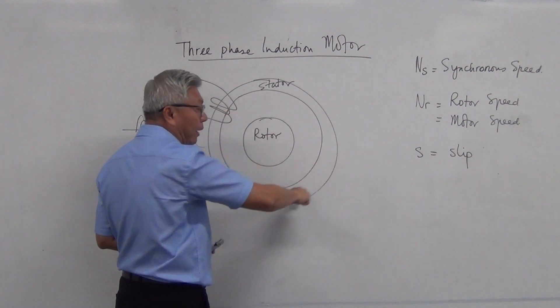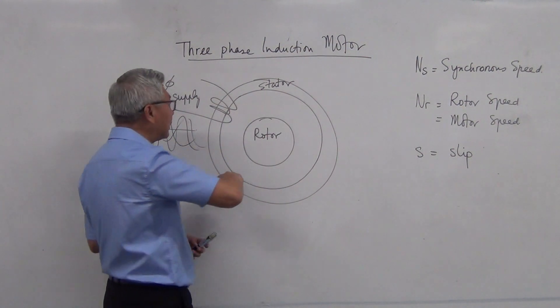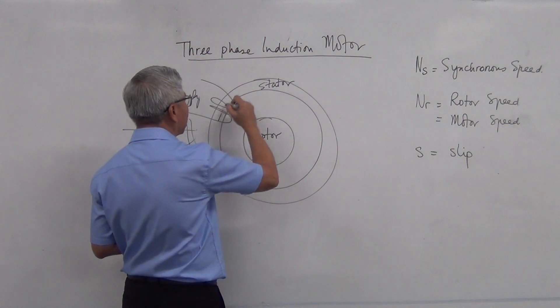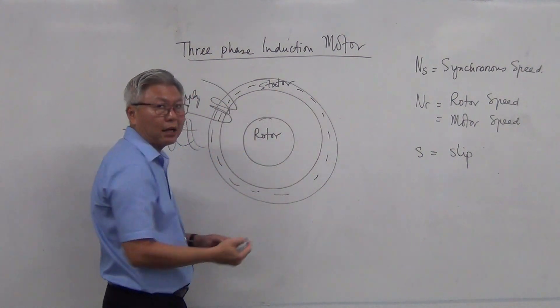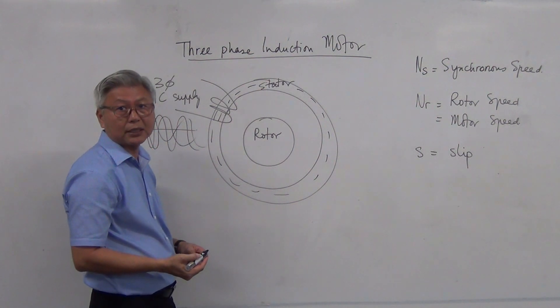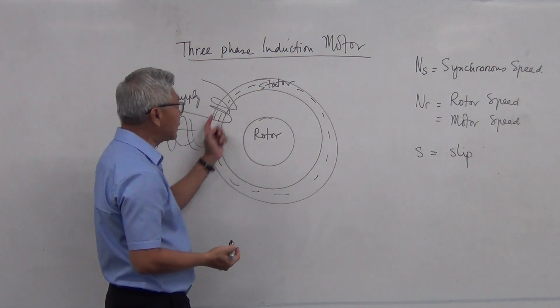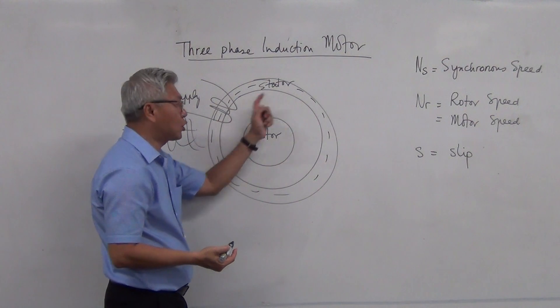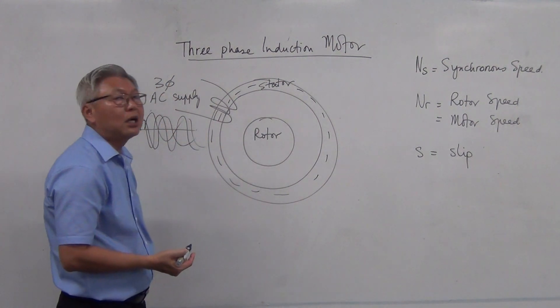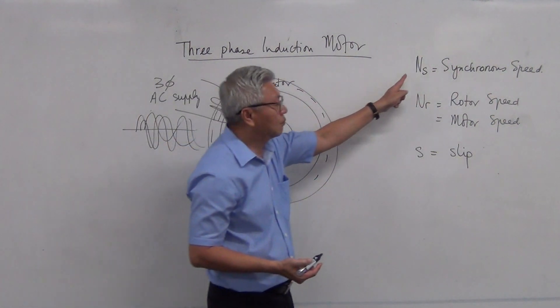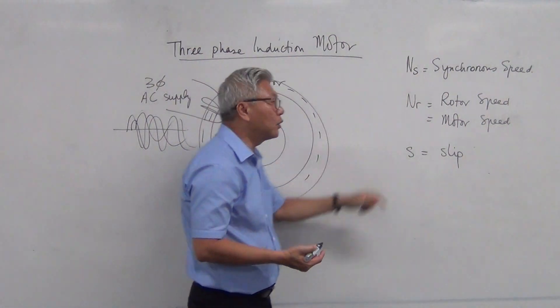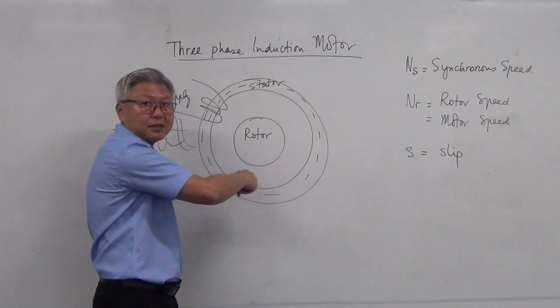And this stator is being magnetized with magnetic flux. So the magnetic flux is being generated and it travels around the stator. And this speed of the magnetic flux that is traveling around is called the synchronous speed.